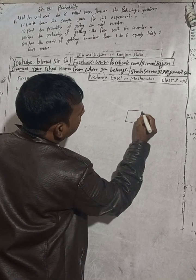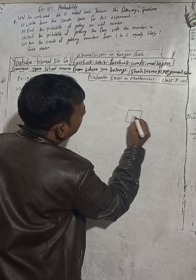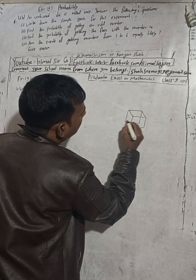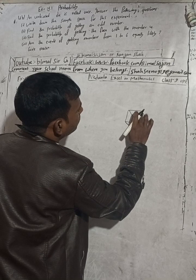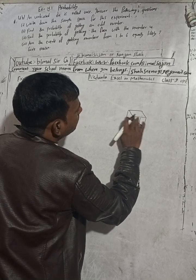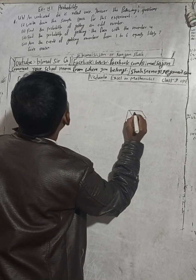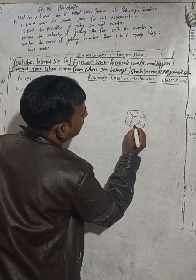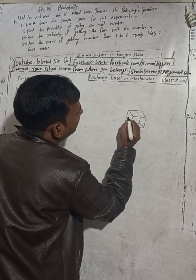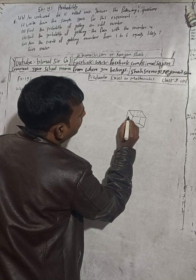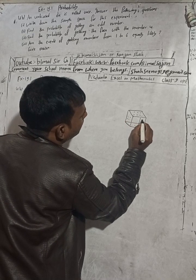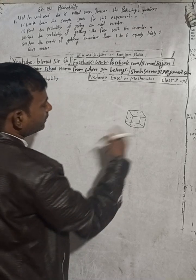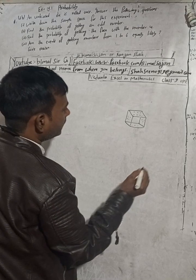So when an unbiased die is rolled, as shown in the figure from the book, it has faces with numbers one, two, three, four, five, and six. One side has five and the other side has two, and so on.